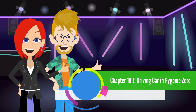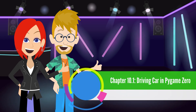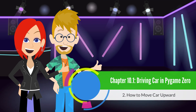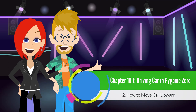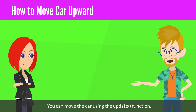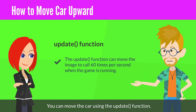Chapter 10.1: Driving a Car in Pygame Zero 2. How to move the car upward. You can move the car using the UPDATE function. The UPDATE function moves the image and is called 60 times per second when the game is running.